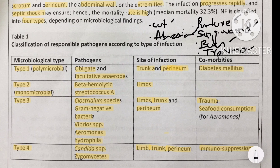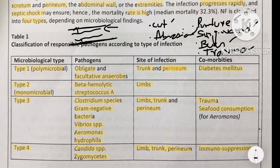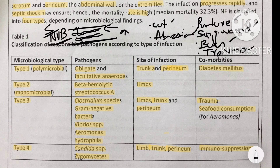One complication of necrotizing fasciitis is increased compartment pressure. Because fascia is dense connective tissue that cannot expand, inflammation beneath the fascia causes increased pressure, leading to swelling and compression of the neurovascular bundle. This is why damage to blood vessels can also be seen in necrotizing fasciitis.